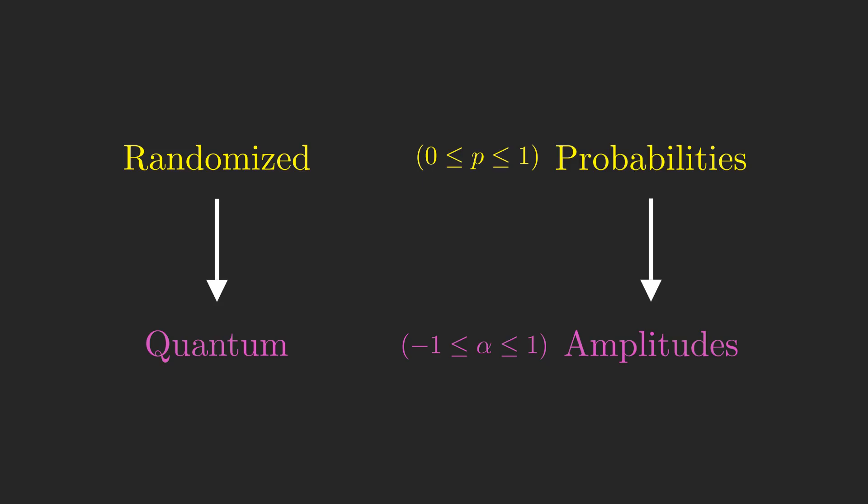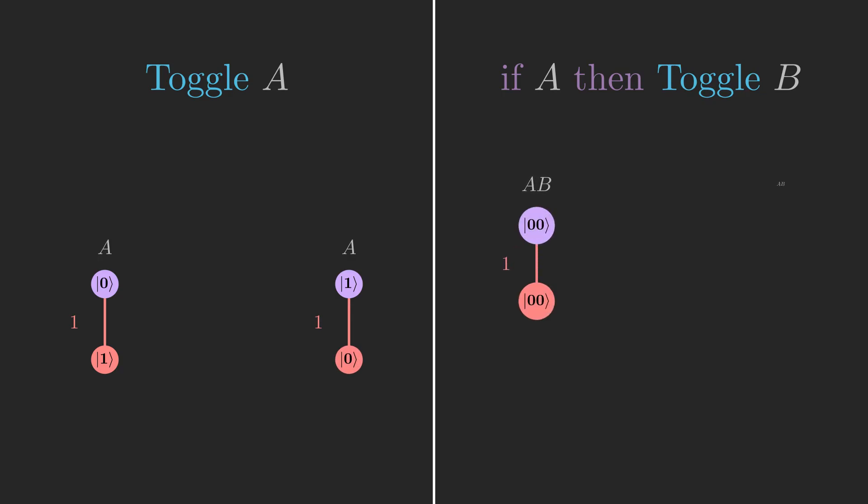So far, we've defined two quantum instructions, being toggle A and if A then toggle B, which have pretty simple amplitude trees. These two examples have only extended operations that we originally understood in a classical sense to fit the quantum programming model. Because of this, they change amplitudes in a rather trivial way, and on their own don't allow us any more utility than classical computation, and you can see that visually through their amplitude trees since there is no branching.